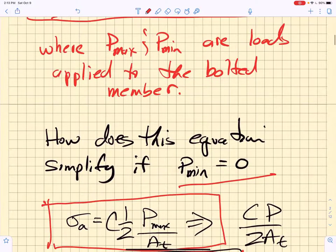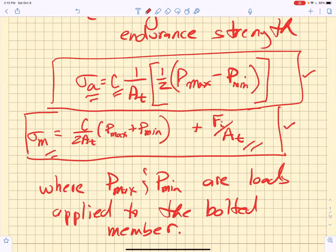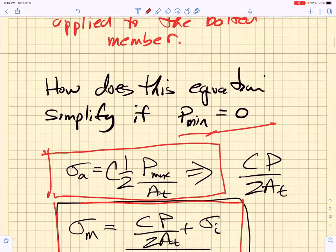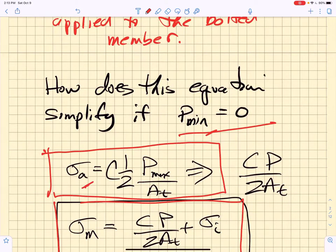What happens if the minimum load goes to zero? Well, if the minimum load goes to zero, this minimum would drop out here, and it would drop out there. And so it turns out under those conditions, the stress amplitude is just half the max divided by the threaded area times C.